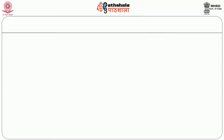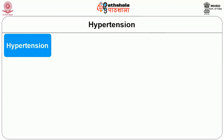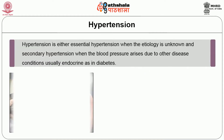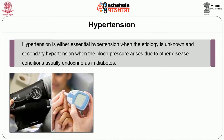Before we move on to the lesson, let us refresh and know what is hypertension. Hypertension is generally defined as a systolic blood pressure of 140 mmHg or higher, or a diastolic blood pressure of 90 mmHg or higher, or both. Hypertension is either essential hypertension when the etiology is unknown, or secondary hypertension when the blood pressure arises due to other disease conditions, usually endocrine, as in diabetes.